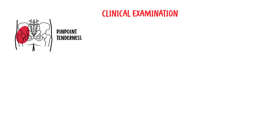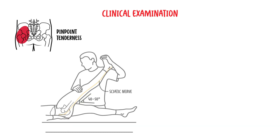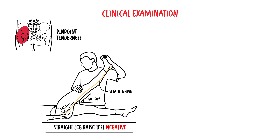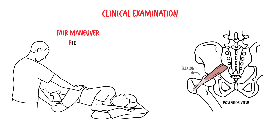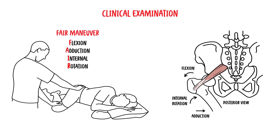On clinical examination, there is pinpoint tenderness on palpation of the upper middle gluteus. When performing a straight leg raise test, this would be negative in piriformis syndrome but is positive in patients with sciatica from a lumbosacral pathology. However, this is not very sensitive as it can also be positive in patients with piriformis syndrome. There can be pain with the log roll test, which involves internal and external rotation of the hip joint. The FAIR maneuver — flexion, adduction, internal rotation — would also be positive.